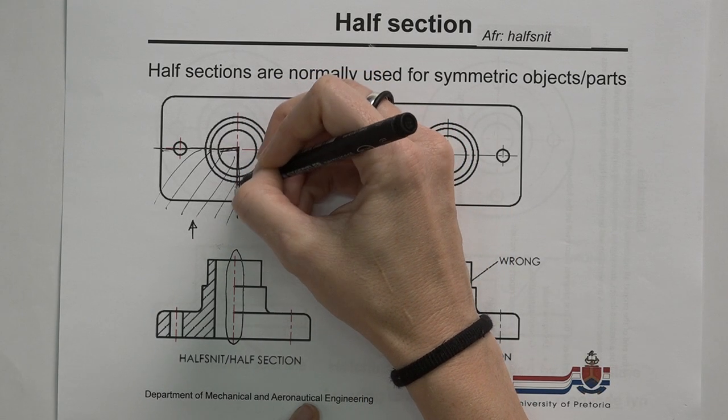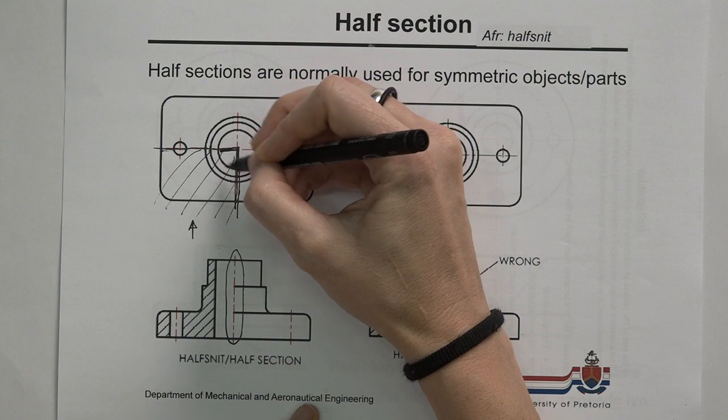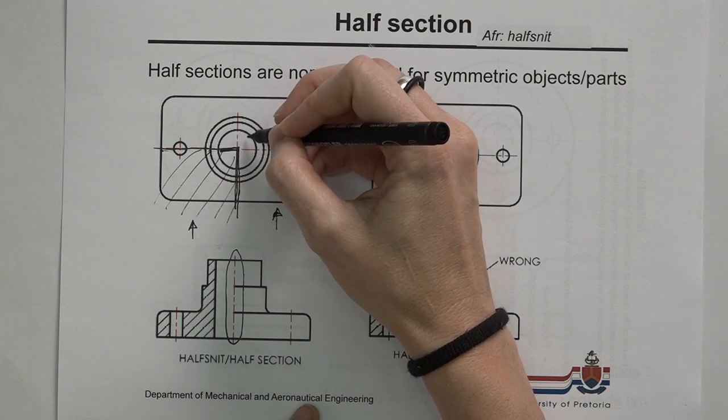So if you look at this, that's the point where we are cutting, and this circle is an empty space. There's no component, no material in there.